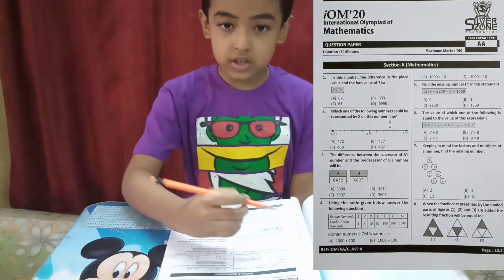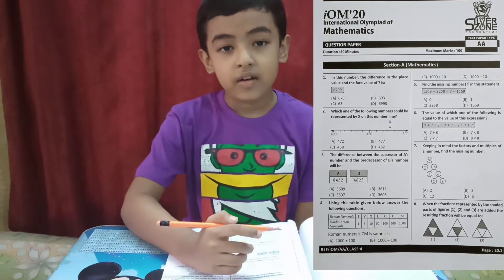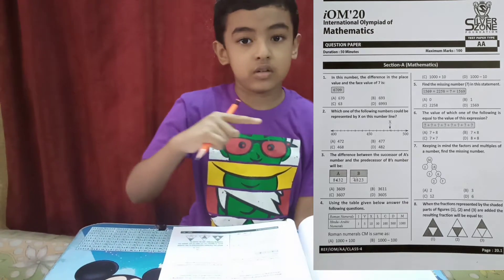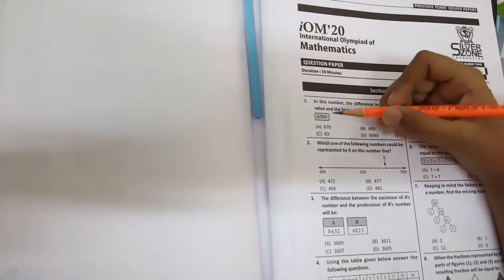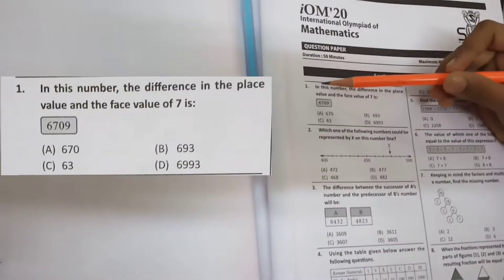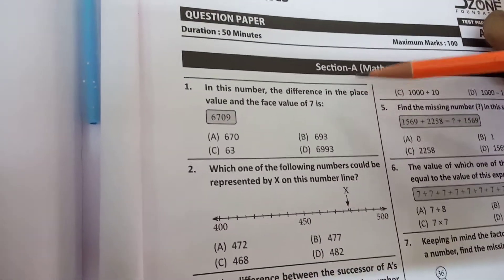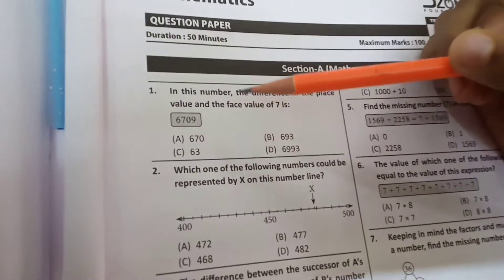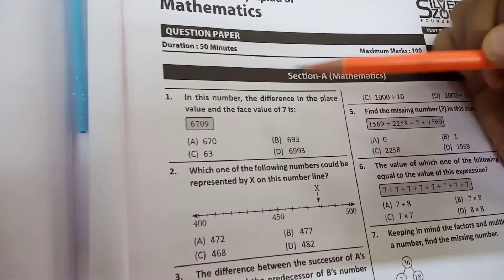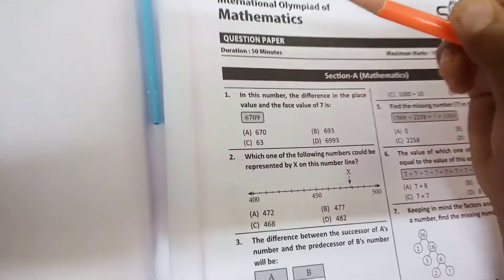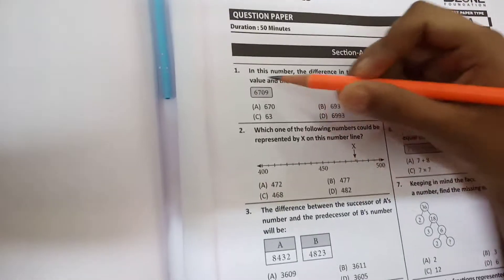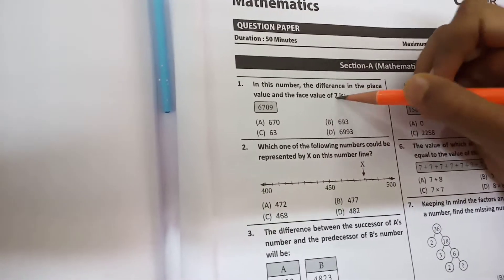First question number 1. You can see the question on the side of the screen. In this question it is showing that in this number, the difference in the place value and the face value of 7 is. So first we need to find out the place value and face value of 7. The place value of 7 is, in this number the place value of 7 is 700.